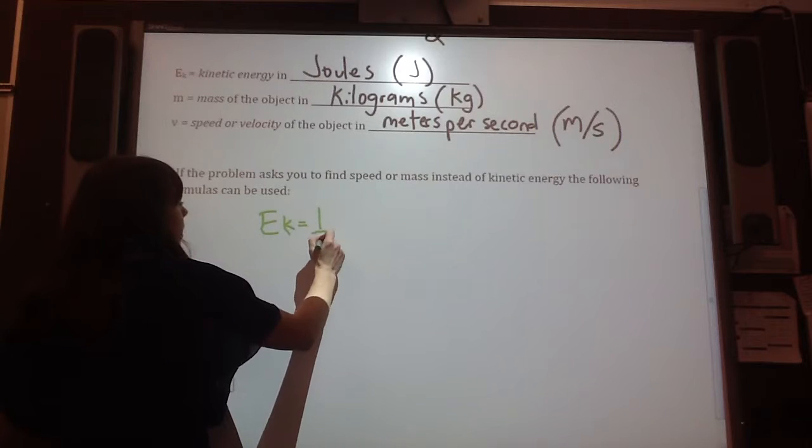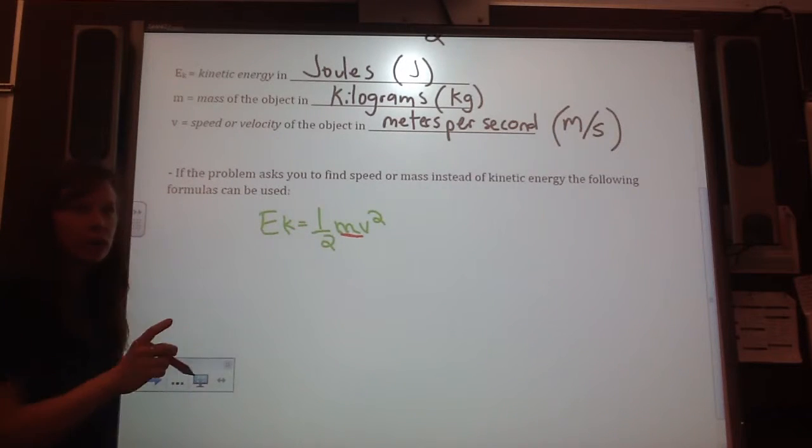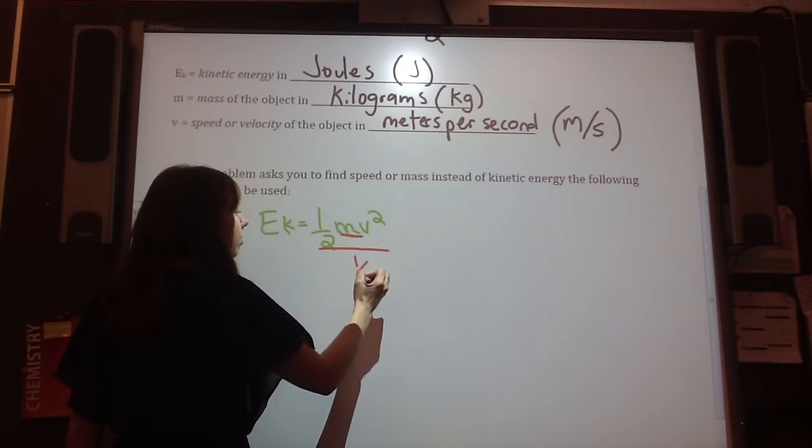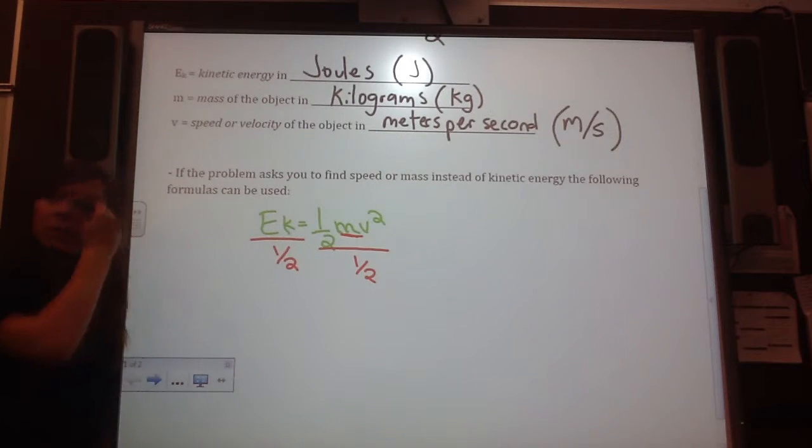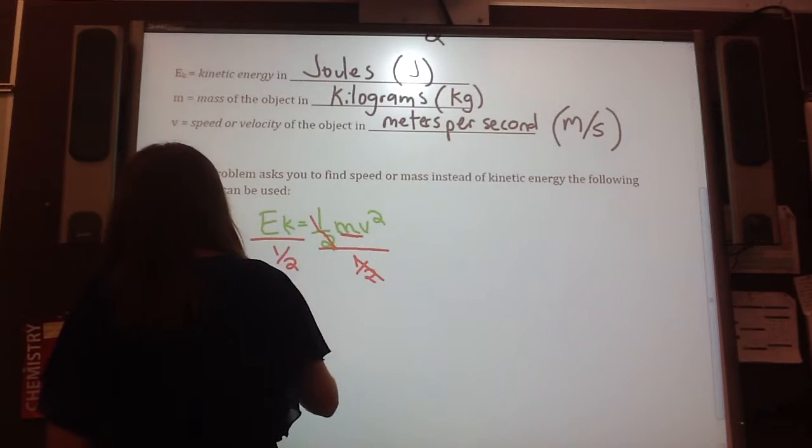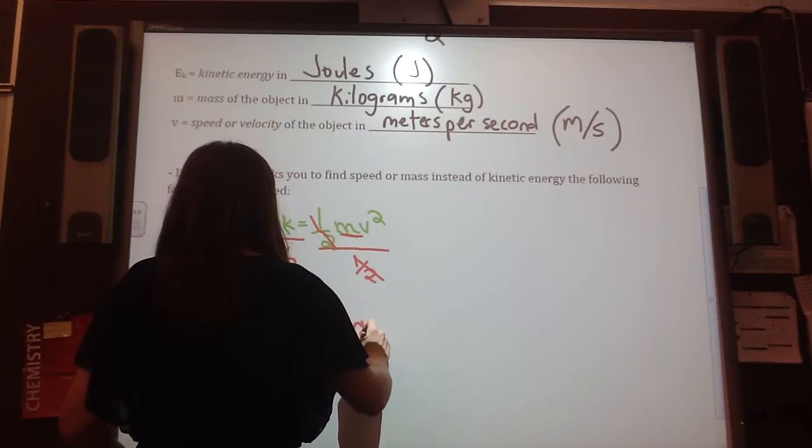So if we start with Ek equals half mv squared, and say I want to solve for m. Well, you think to yourself, m is attached, it's multiplied by a half. So to get rid of multiplying by a half, I divide by a half, and I divide by a half. Dividing by a half is the same as... if you instead want to change your sign, and you flip the fraction, multiply by the reciprocal. Anyways, you cross off your halves, and you're left with Ek divided by a half is equal to mv squared.